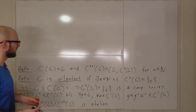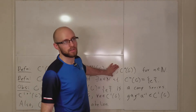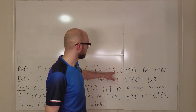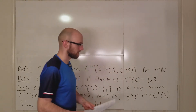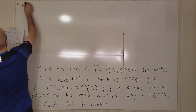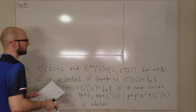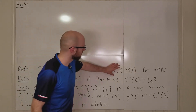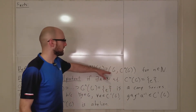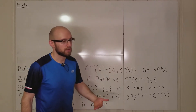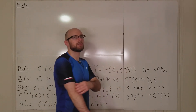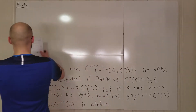This looks a little bit like the way we defined solvable groups, except if you were to replace G with C^n(G) then it would be the same thing. Each of the C^n's is slightly bigger than what it would be if you were just taking the commutator of the thing with itself, so you'd expect it to potentially be a little bit bigger — and that's sort of what happens.